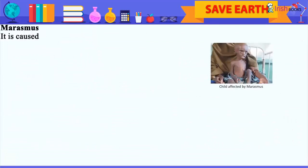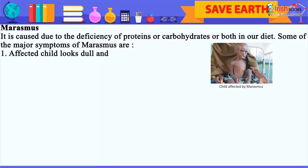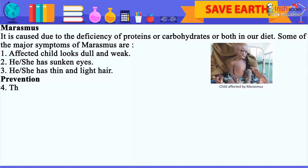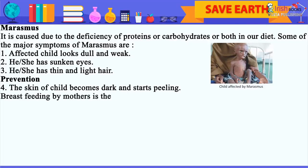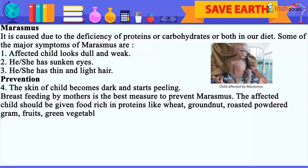Marasmus: It is caused due to the deficiency of proteins or carbohydrates or both in the diet. Some of the major symptoms of Marasmus are: 1. The affected child looks dull and weak. 2. He or she has sunken eyes. 3. He or she has thin and light hair. 4. The skin of the child becomes dark and starts peeling. Prevention: Breastfeeding by mothers is the best measure to prevent Marasmus. The affected child should be given food rich in proteins like wheat, groundnut, roasted powdered gram, fruits, green vegetables, pulses, soya beans and skimmed milk.